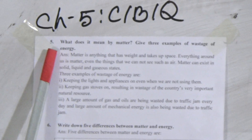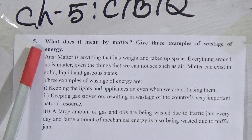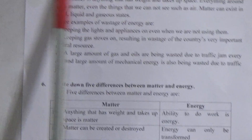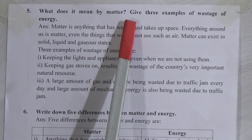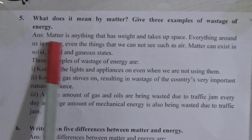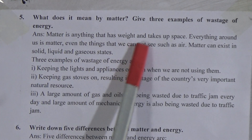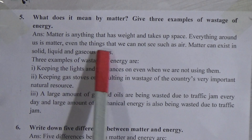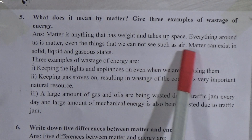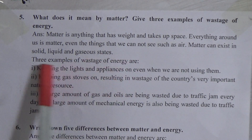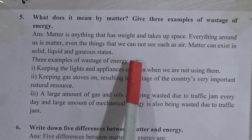In our previous class we already discussed competency-based question answers up to question 4. Today we will start from question 5. The first competency-based question: What does it mean by matter? Give three examples of wastage of energy. Matter is anything that has weight and takes up space. Everything around us is matter, even the things we cannot see such as air. Matter can exist in solid, liquid, and gaseous states.